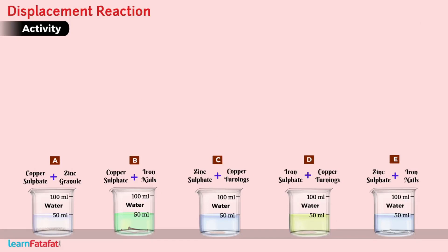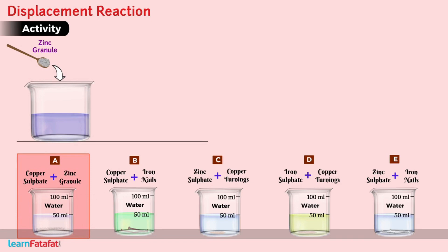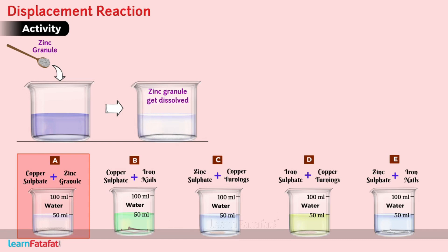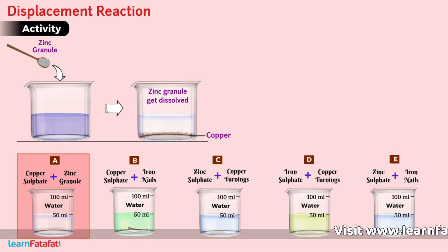Dear students, in beaker A, when zinc granule is added, the colour of the solution changes from blue to colourless. At the same time, the zinc granule gets dissolved and a powdery red mass gets deposited at the bottom, which is copper.